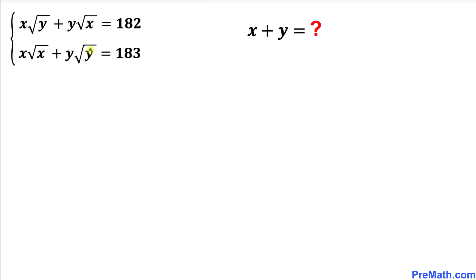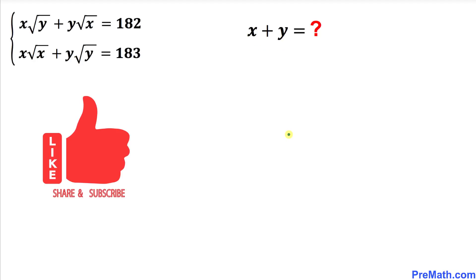Welcome to pre-math. In this video we have a system of two equations: x times square root of y plus y times square root of x equals 182, and the second equation is x times square root of x plus y times square root of y equals 183. We are going to find x plus y.